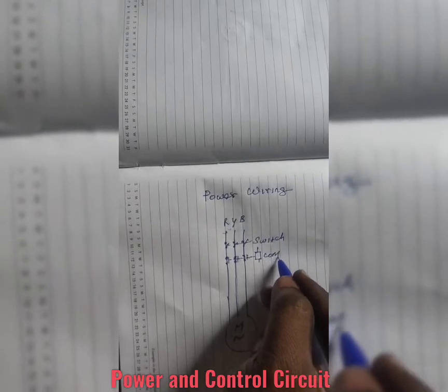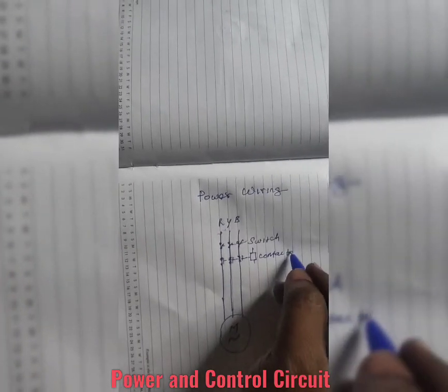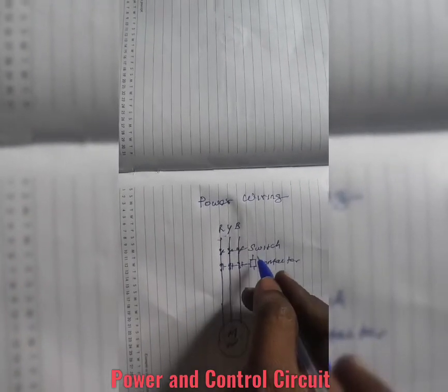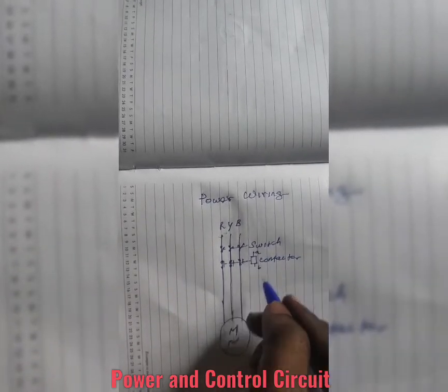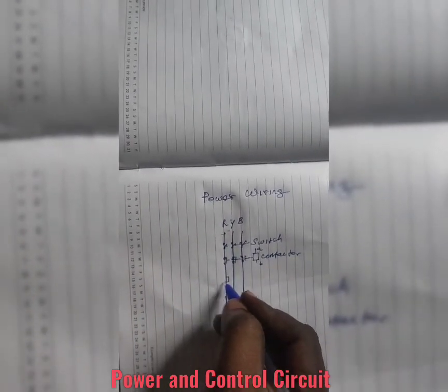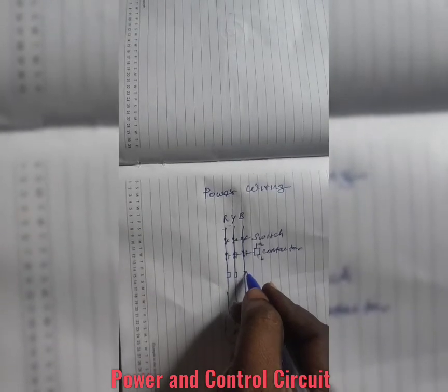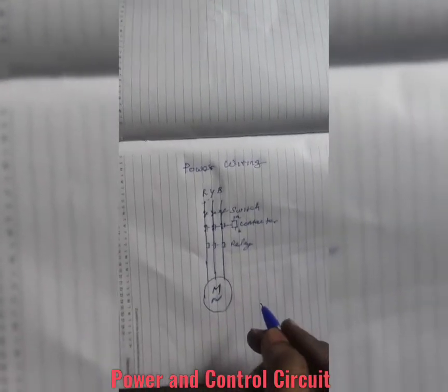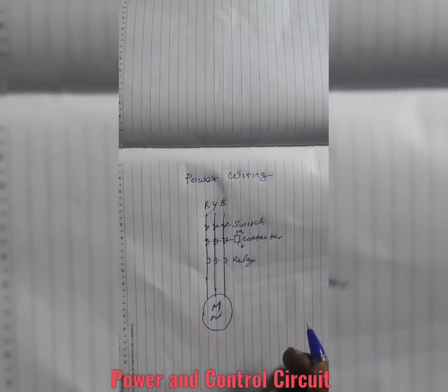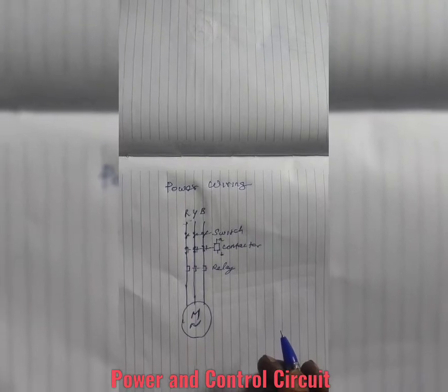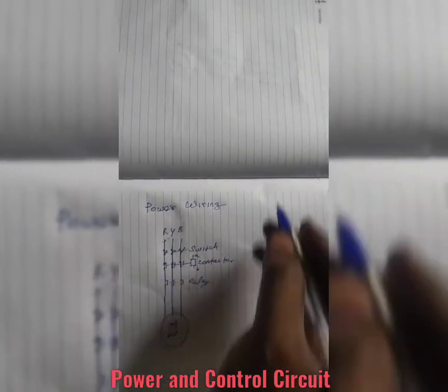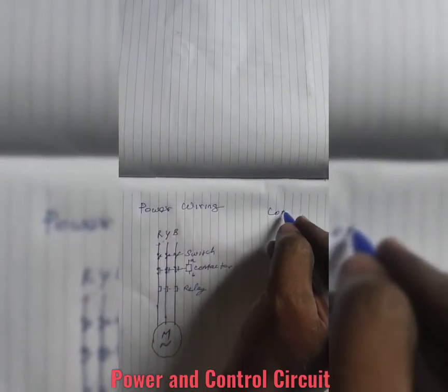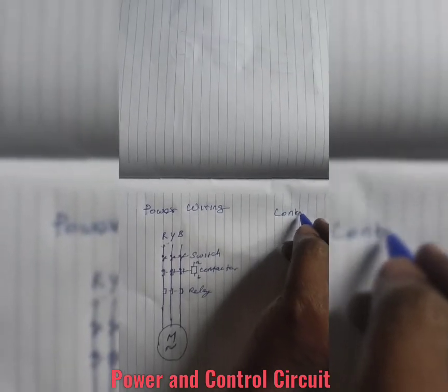Now I am providing one contactor. This contactor can be controlled by some other control wiring. That wiring is given separately, so it's called the control wiring. Through the control circuit we can control the motor as our requirement.